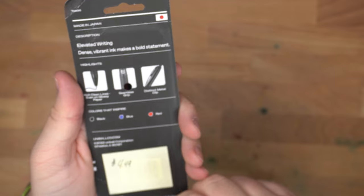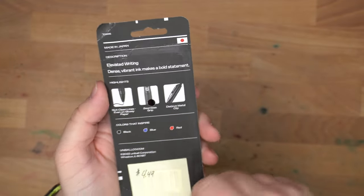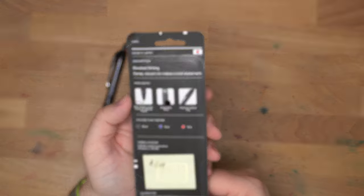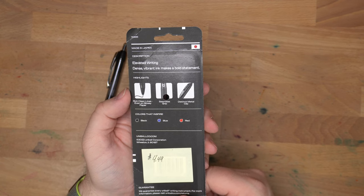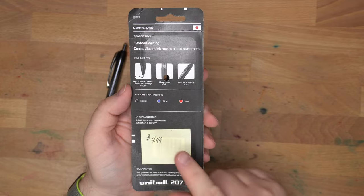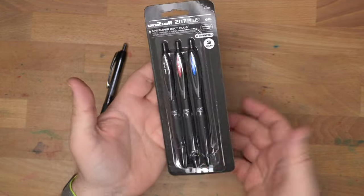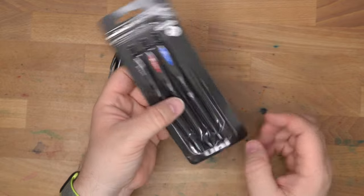And on the back it says Elevated Writing Made in Japan Dense Vibrant Ink Makes a Bold Statement, Rich Clean Lines Even on Glossy Paper Seamless Grip Distinct Metal Clip. I got these for $4.49 for 3 pens. So a perfectly cromulent amount of dollars for 3 pens.